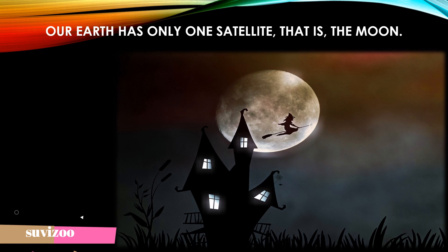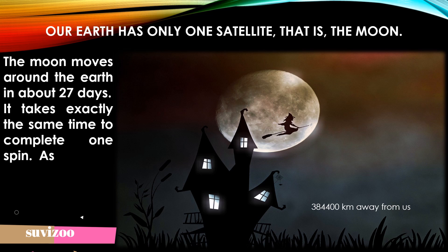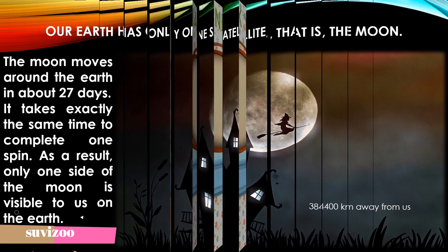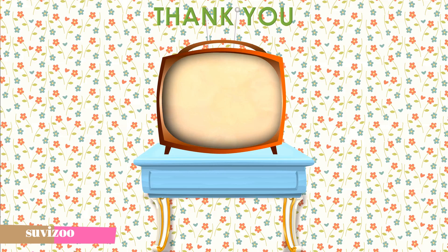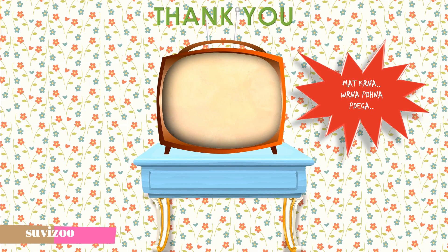The Moon is 384,400 kilometers away from us. The Moon moves around the Earth in about 27 days, and it takes exactly the same time to complete one spin. As a result, only one side of the Moon is visible to us on the Earth.